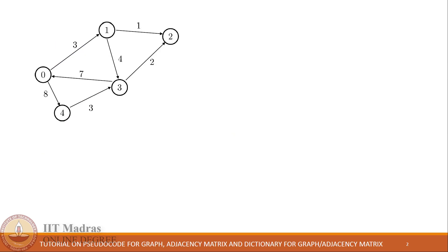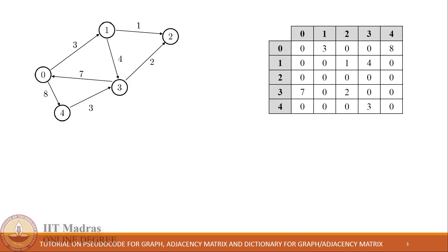Let's consider this given graph. If we observe this particular graph, we can notice that it is a directed graph and each edge is labeled with some number. So we can say that it is an edge-labeled directed graph. Now let's try to convert this graph into its equivalent matrix. The matrix representation on the right-hand side represents the graph on its left.